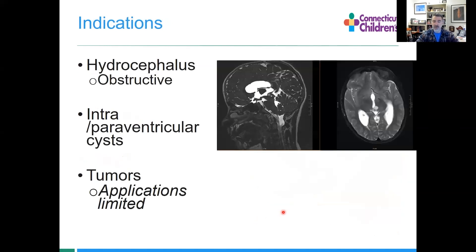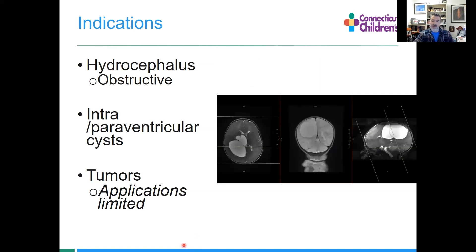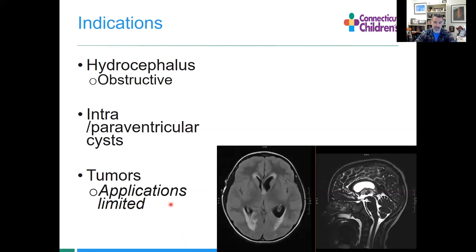What do we use this to treat? Hydrocephalus - too much water in the brain, usually the obstructive variety where we can poke a hole and create a pathway for CSF. We can also treat intraventricular and paraventricular cysts, and finally in some circumstances where we have very small tumors, there are limited applications for ventriculoscopy.